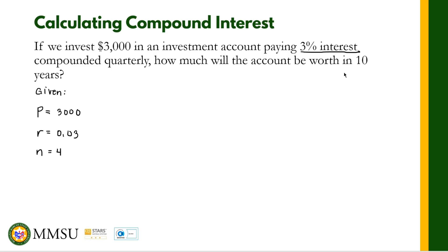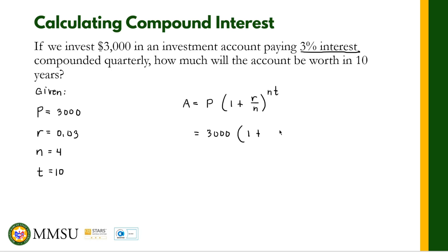We want to find the amount A at time t equals 10 years. Using the compound interest formula: A = P(1 + r/n)^(nt). Substituting the values: A = 3000 times (1 + 0.03/4) raised to the power of 4 times 10.